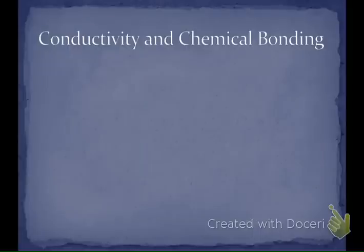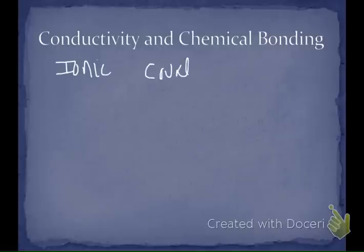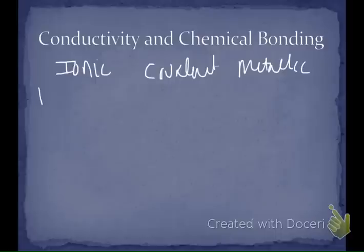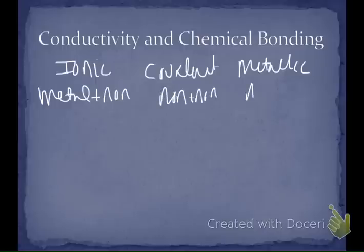Today in class we talked about conductivity and chemical bonding, and a couple things to review. You need to know by just looking if a compound is ionic, covalent, or metallic. If it's ionic, we're going to expect to see a metal and a nonmetal. If it's covalent, we're going to expect to see two nonmetals. And if it's metallic, you're going to expect to see two metals.